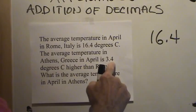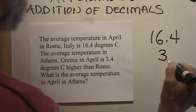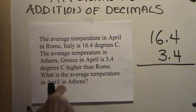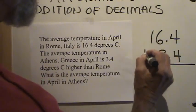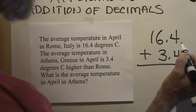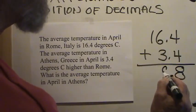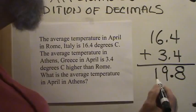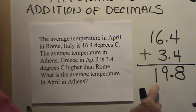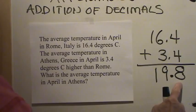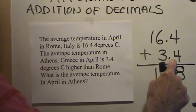Let's try another one. The average temperature in April in Rome, Italy is 16 and 4-tenths degrees Celsius. The average temperature in Athens, Greece in April is 3 and 4-tenths degrees Celsius higher than in Rome. What is the average temperature in April in Athens? Go ahead and put the video or DVD on pause, work this problem, and then turn it back on and we'll go over it.